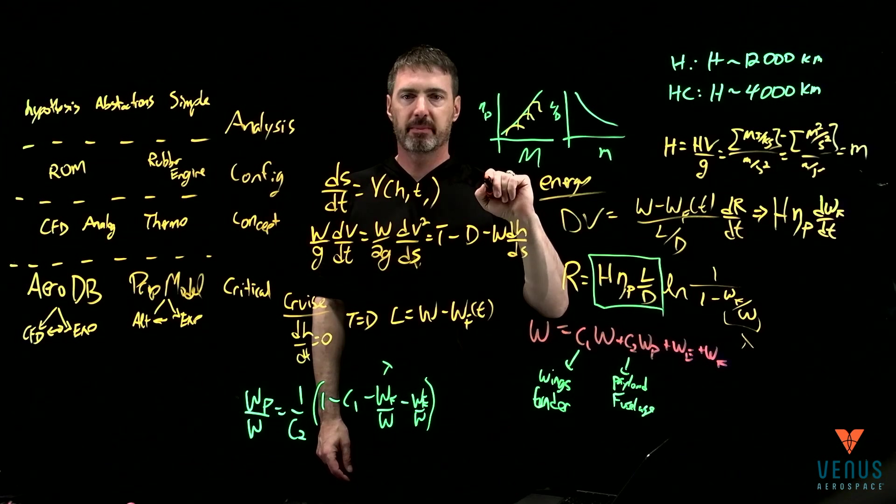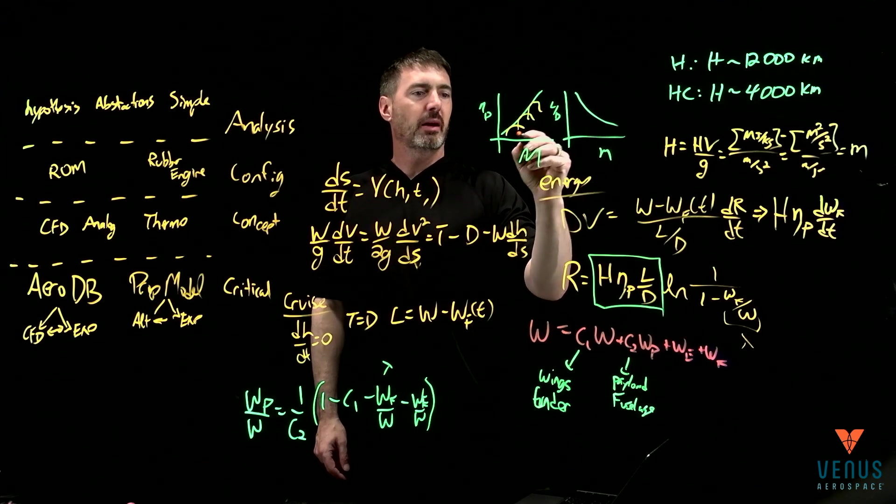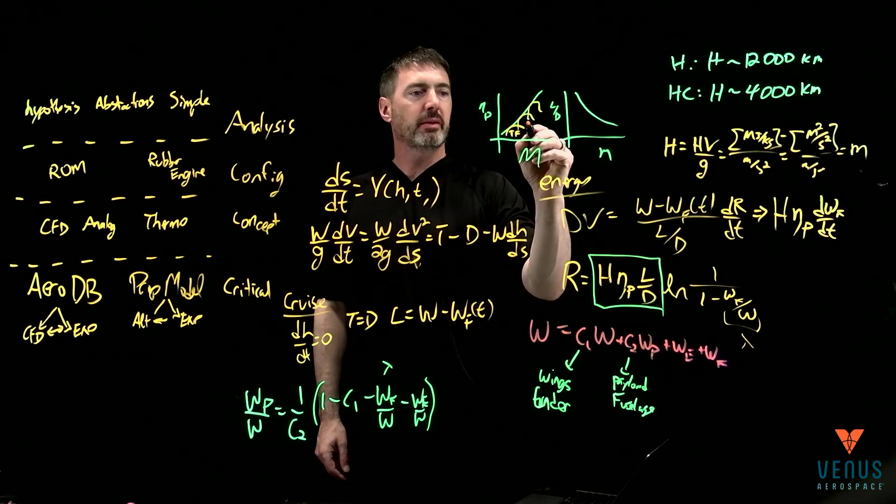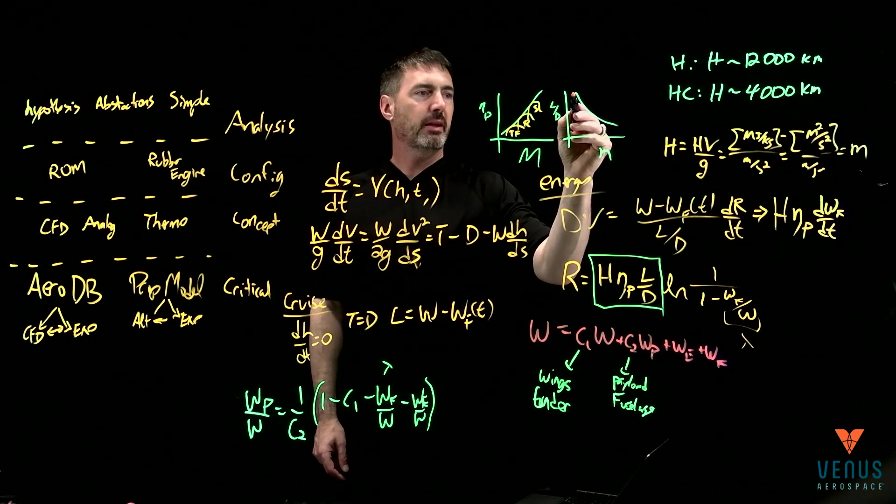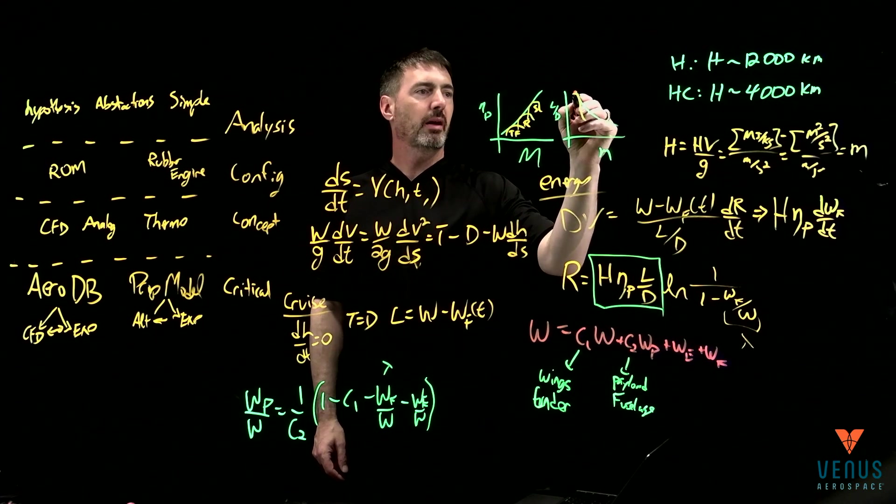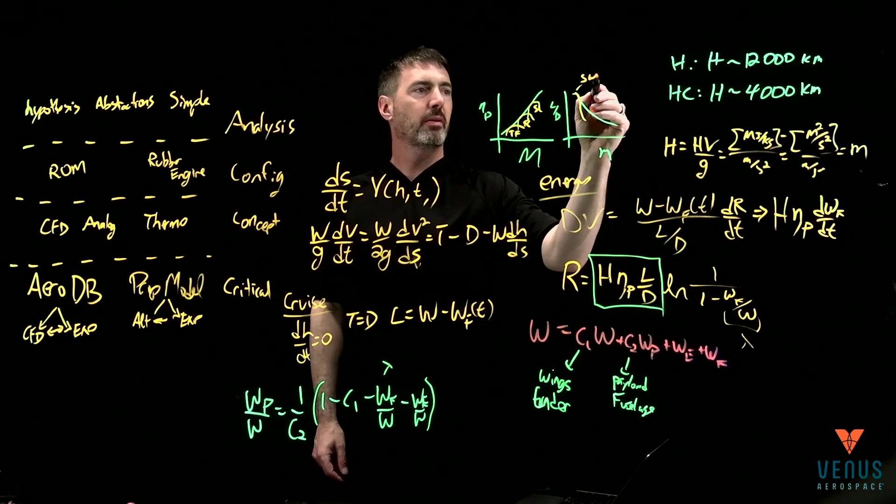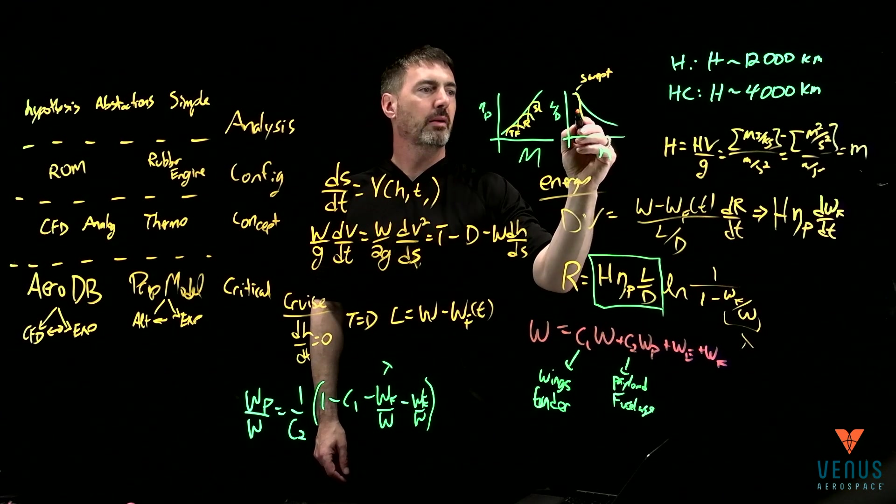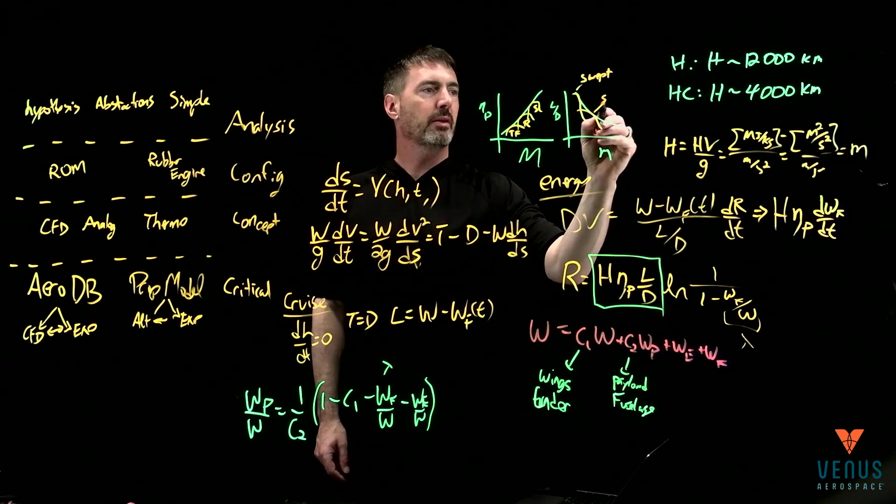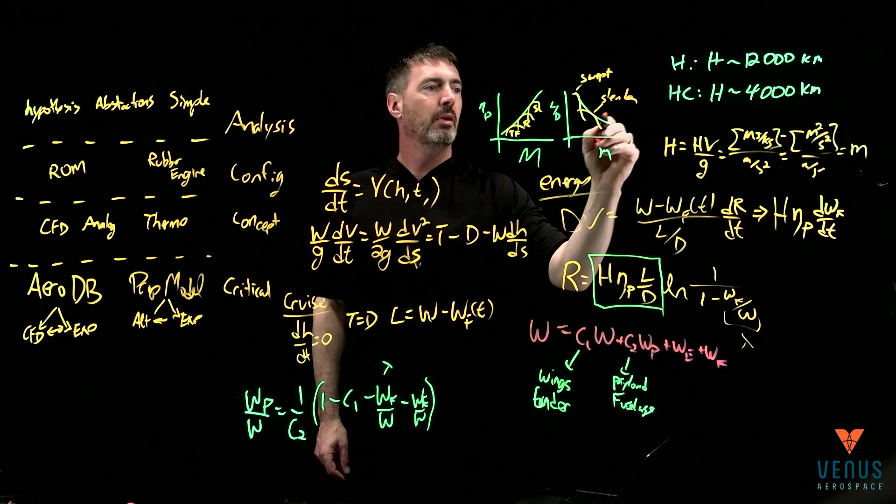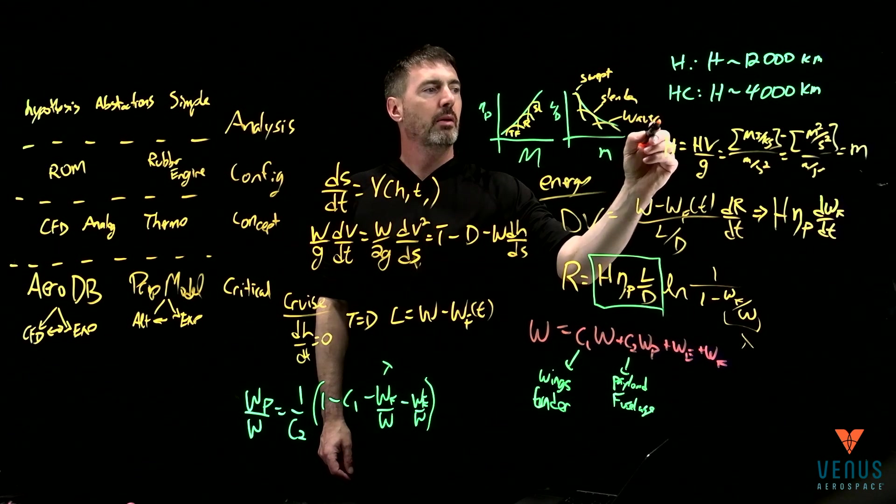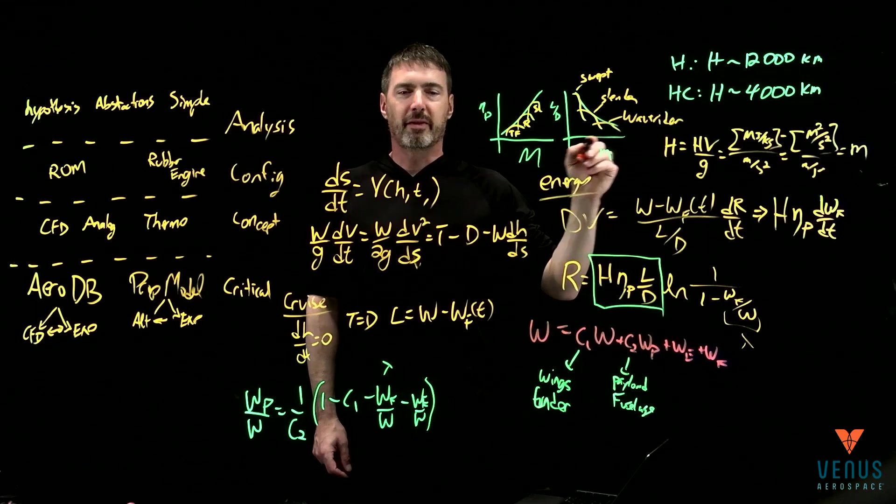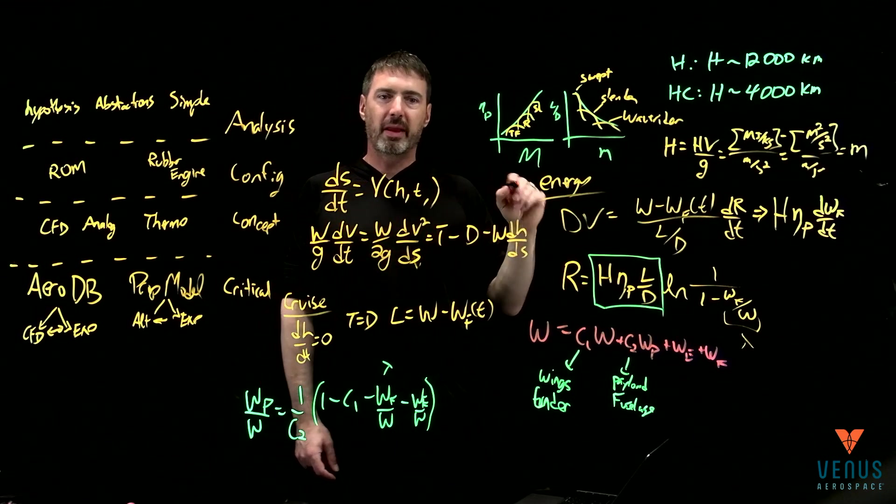And the lift to drag versus Mach number decreases. This is kind of true in general. This is true for, in general, but really we see this for, that might be turbofans, that might be ramjets, and that might be scramjets. This is turbofan, this is ram, that's scram, and then lift to drag. This might be, this is swept wing, slender, and then wave rider.